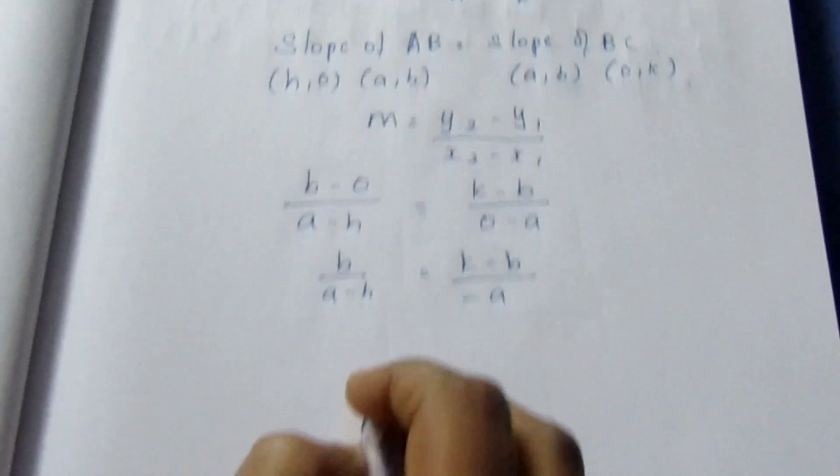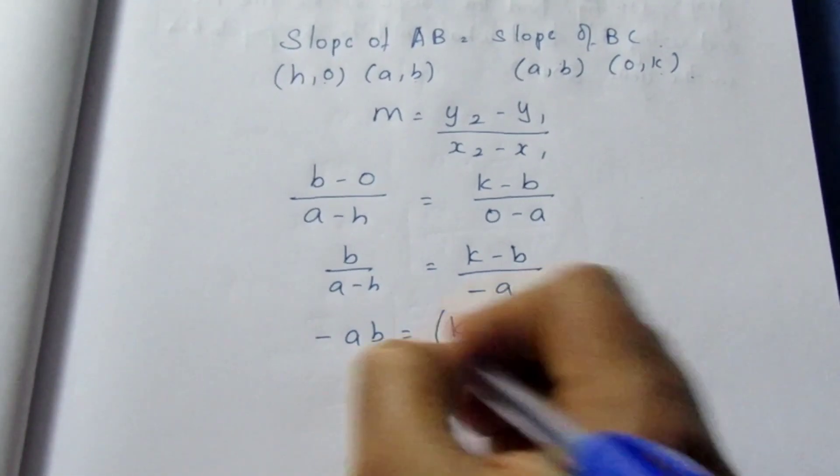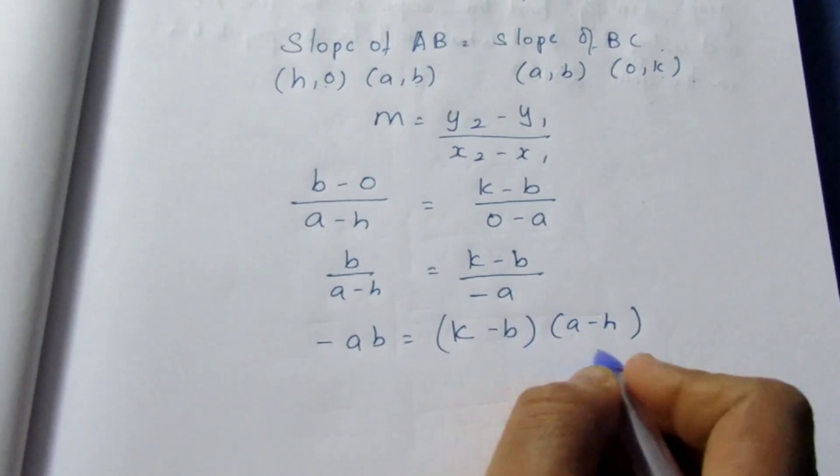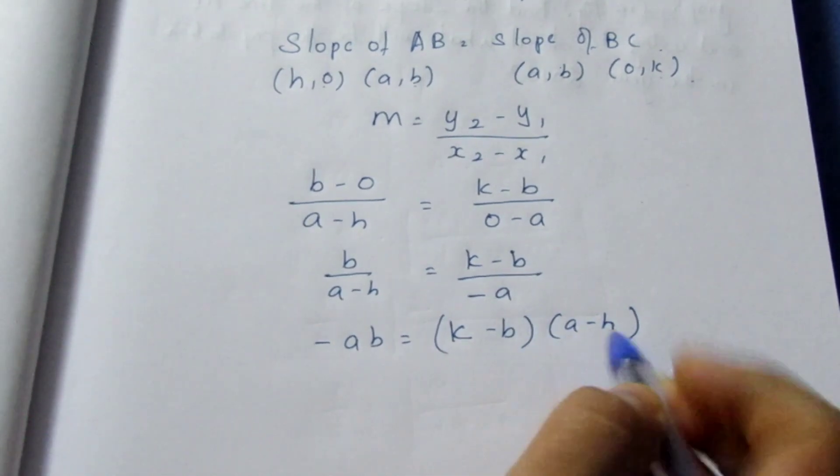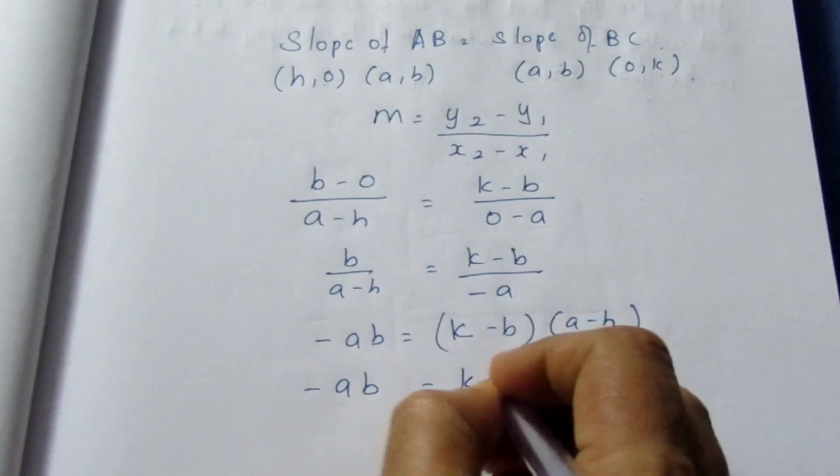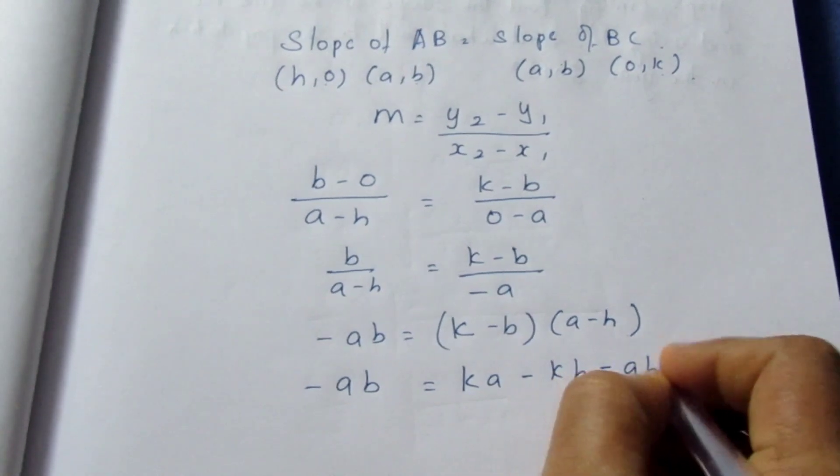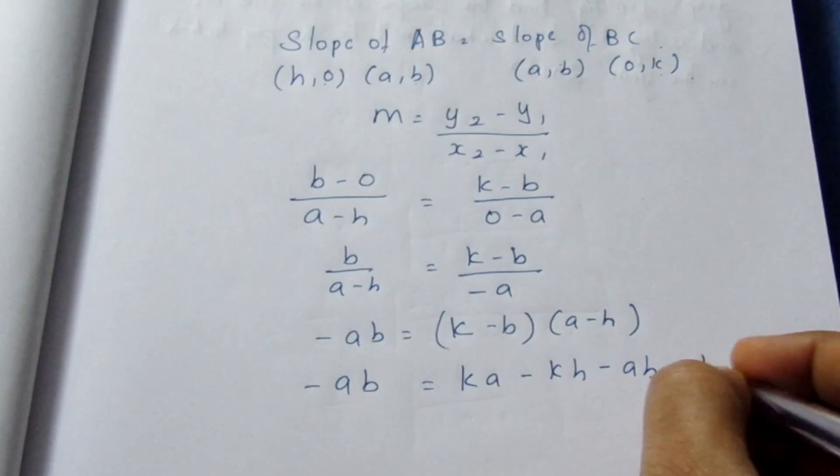If we cross multiply, this becomes -ab = (k-b)(a-h). We need to do binomial multiplication. This must be multiplied with both the terms and even this must be multiplied with both the terms. It becomes ka minus kh, here minus ab, here minus bh.